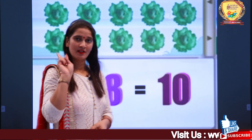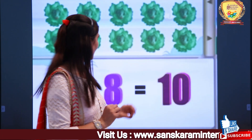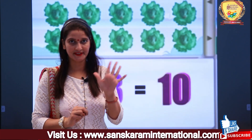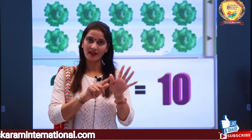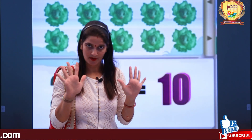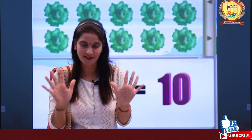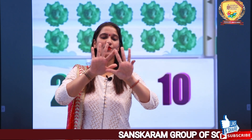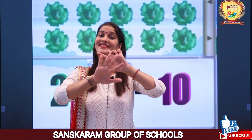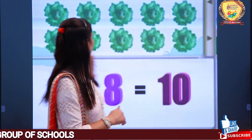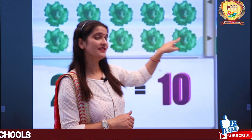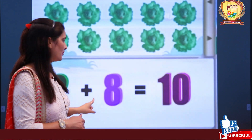Cabbage is here. First we had 2 cabbages, then 8 more cabbages came. How many cabbages are there now? Let's count — 1, 2, 3, 4, 5, 6, 7, 8, 9, 10. Let's check — 1, 2, 3, 4, 5, 6, 7, 8, 9, 10. It means 2 plus 8 is equal to 10.